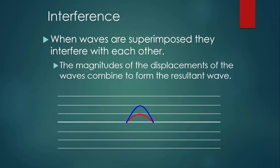If we call the displacement of the red pulse one and the displacement of the blue pulse two, then the resulting wave while they're superimposed would be three. Now after they interfere with each other, they just continue going the way they were going, as if nothing ever happened.